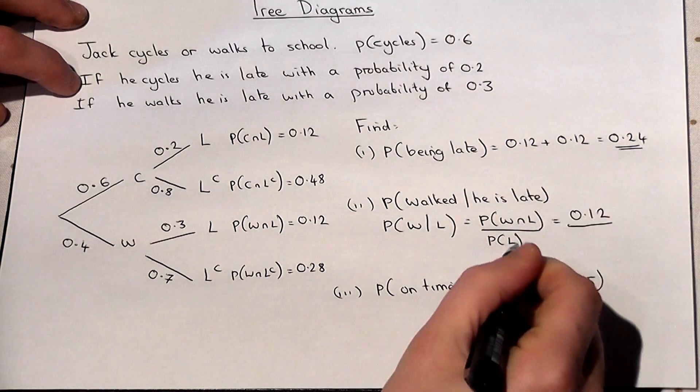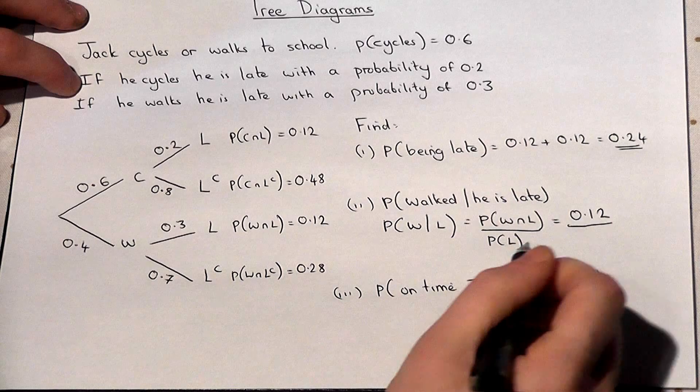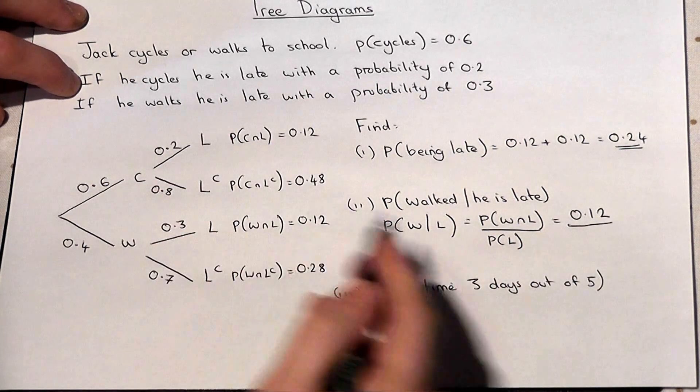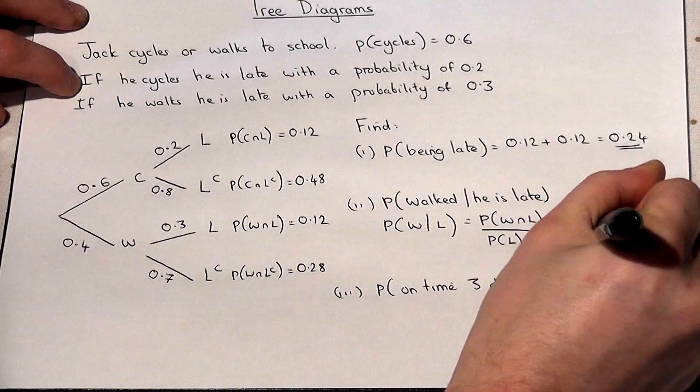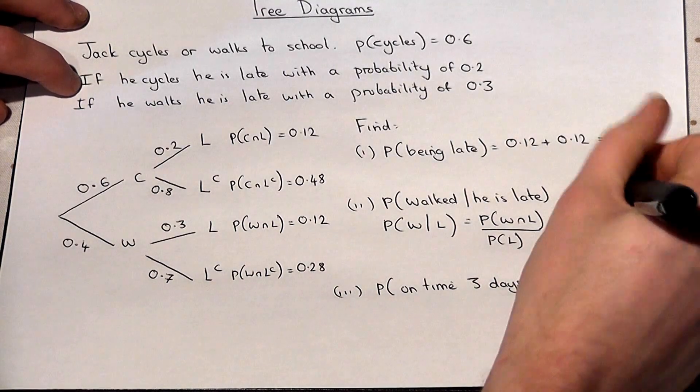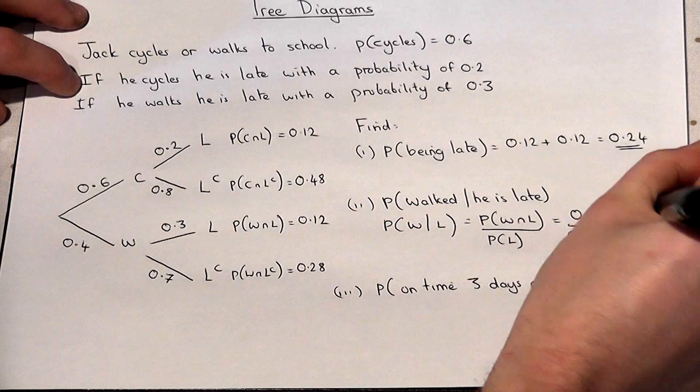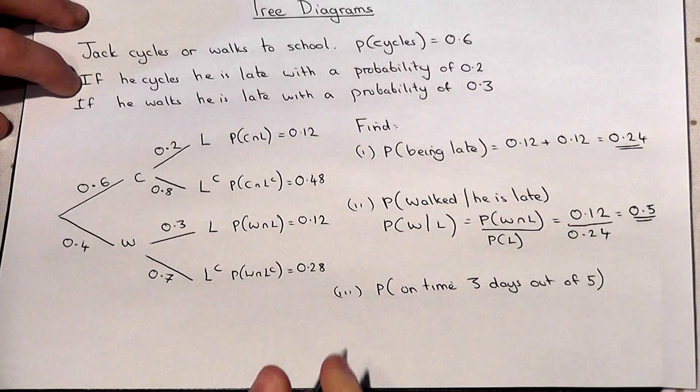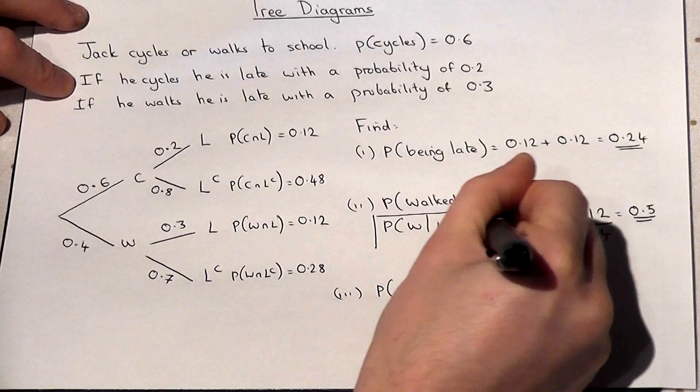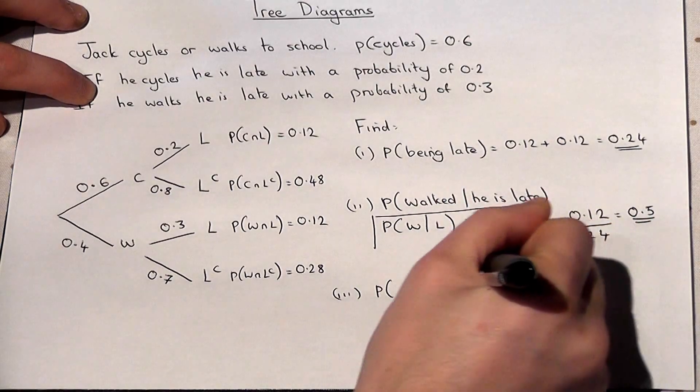However, the chance of being late is what we worked out. It was 0.24. There were those two options there. So therefore it's 0.12 over 0.24 which is 0.5. So this is a key key formula which you must learn.